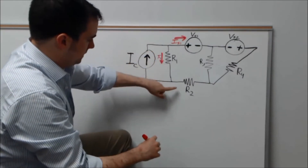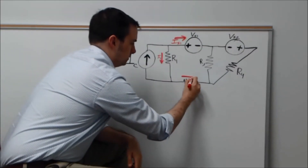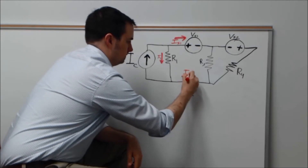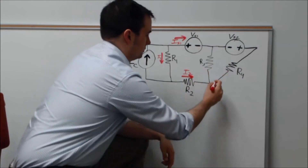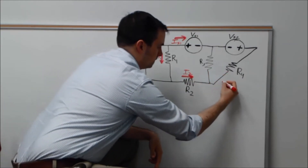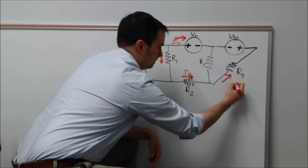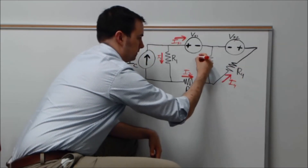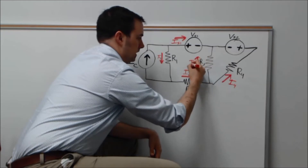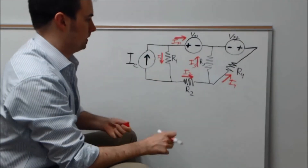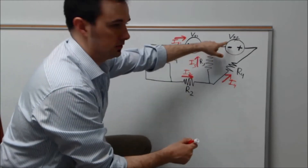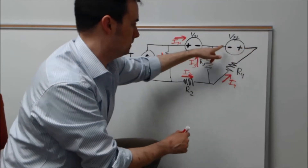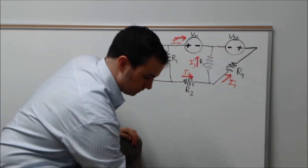Going down this way, I can define another current flow — I'll say it goes in this direction — so this will be IS2. Coming up here, I can define two more currents: IS4 to correlate with R4, and up through this branch, IS3 to correlate with R3. I don't need to define anything separately for this voltage source, since the current flowing through this resistor is going to be the same as what's flowing across that source.